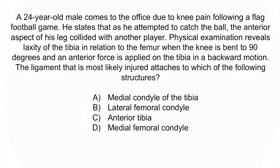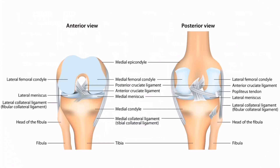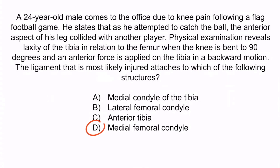Going back to the question, now we know that this patient has a PCL injury, but we're asked where the PCL attaches. The correct answer is D, the medial femoral condyle. The PCL clearly runs from the medial femoral condyle to the posterior aspect of the tibia. Answer A is describing the attachment of the MCL, B is describing the LCL, and C is describing the ACL.